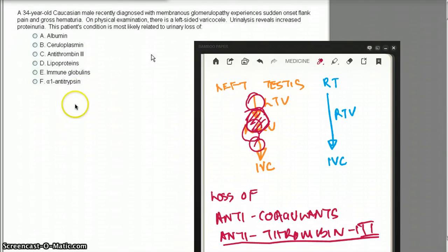And last is choice F, alpha-1-antitrypsin. Alpha-1-antitrypsin deficiency is an inherited condition that results in early signs of liver cirrhosis and panacinar emphysema. That is not going to cause MGN and hypercoagulable state.